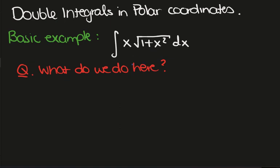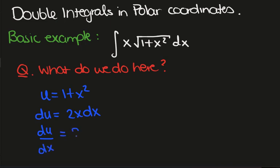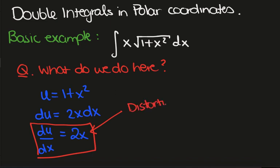What do we do here? The typical thing is to set u equal to 1 plus x squared, but then you have to get rid of the dx. You write du = 2x dx, so du/dx = 2x. Why is that there? It's because when we change variables, the area gets distorted in a particular way — distorted by exactly this factor. So this is the distortion factor.